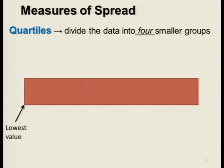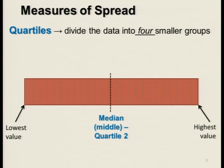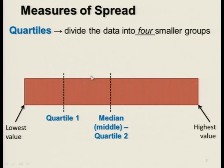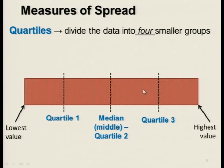If we take our set of data with our lowest value and our highest value, in the middle we put the median which divides the data set exactly into two equal parts. If we now divide the left-hand side again into two equal parts, we get a quarter of our data on each side — we refer to this value as quartile 1, or the lower quartile. Similarly, we can divide the right-hand side into two equal parts, giving us Q3, or the upper quartile.